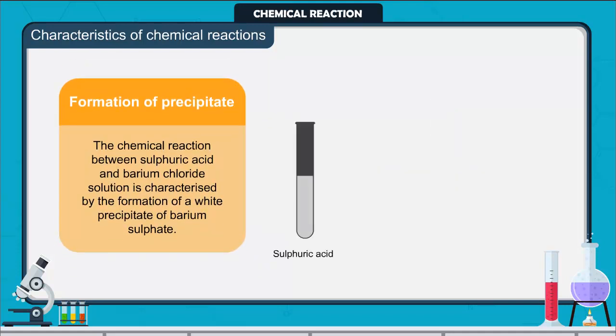Formation of precipitate: The chemical reaction between sulfuric acid and barium chloride solution is characterized by the formation of a white precipitate of barium sulfate.